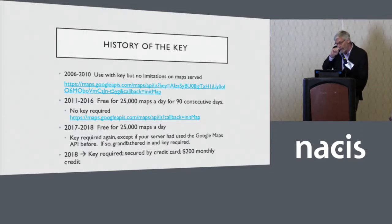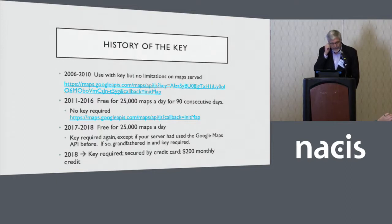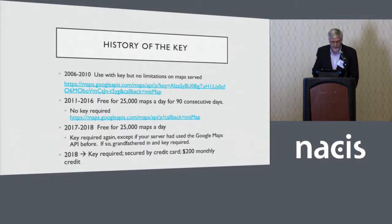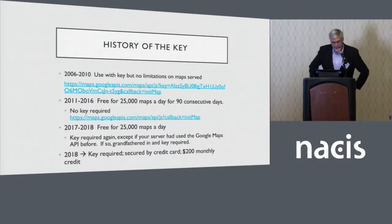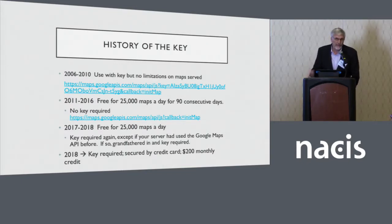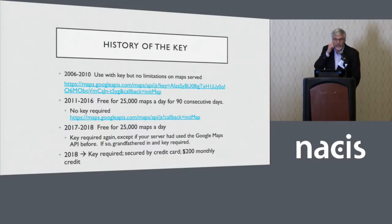The history of the key is as follows. From 2006 to 2010, you needed a key but could use Google Maps as much as you wanted with no limitations. In 2011–2016, it was essentially free for 25,000 maps a day for 90 consecutive days. I always had a standing challenge to my students to try to develop a Google Map that would get 25,000 map views a day for 90 consecutive days, and nobody was able to achieve that.